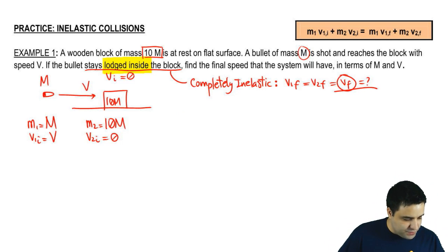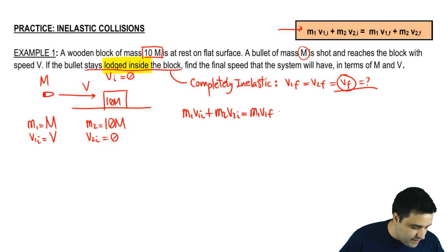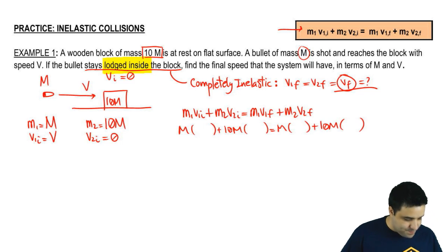So we do this by using conservation of momentum equation. So M1V1, M2V2, M1V1, M2V2. The mass, the first mass is big M. The second mass is 10 big M, big M, 10 big M.